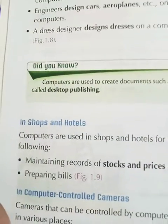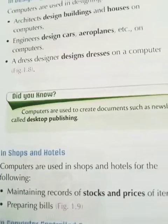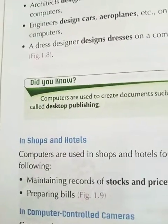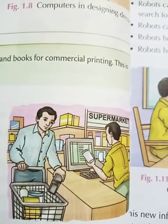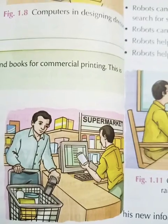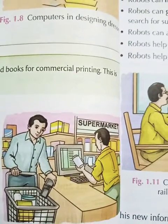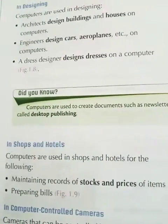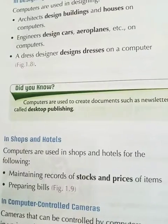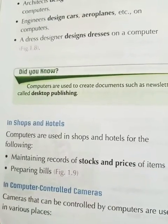Now the next use is: in shops and hotels. You have seen computers kept in shops. What are they used for? They are used for generating bills. When a customer has finished shopping and comes for payment, their entire record is checked on the computer and the bill is printed from there. Besides this, shopkeepers maintain records of stock — how much of each item is available and the price of each item — all maintained on the computer.